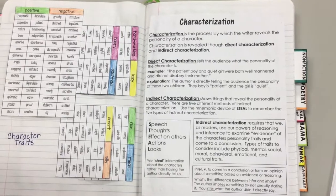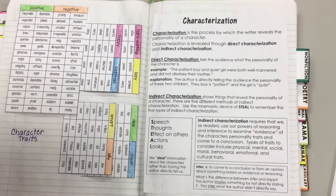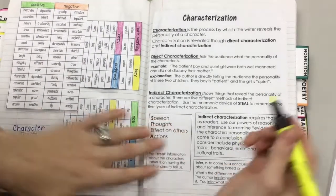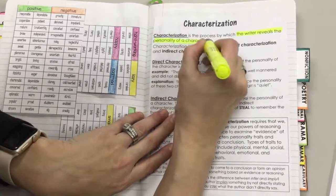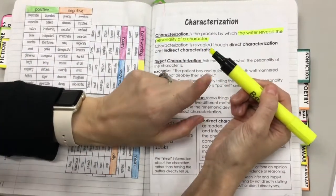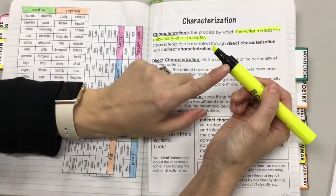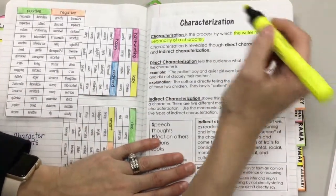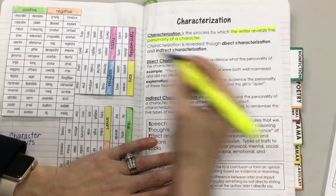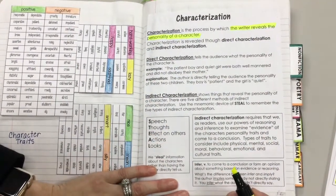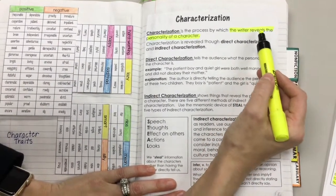Basically, characterization is the process by which the writer reveals the personality of a character. The writer reveals the personality of a character. Whatever you need — colored pencil, highlighter, pen — use it to color code your notes and highlight the important information. We're only going to highlight the critical bits. The key word there is reveals.